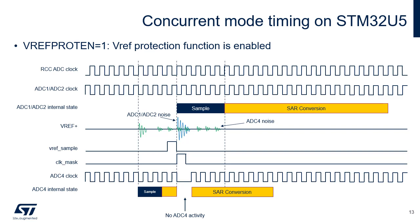This timing diagram clarifies the VREF protection mechanism when ADC1-ADC2 and ADC4 are used concurrently. ADC4 samples an analog channel, generating noise on VREF+. Then ADC1-ADC2 also starts a sampling. Since VREF protection is enabled, this stalls ADC4 for one clock cycle thanks to the clock mask internal signal. During this clock cycle, ADC1-ADC2 generates noise on VREF+. One clock cycle later, conversion resumes in ADC4. By this means, noise generated by ADC1-ADC2 will not affect ADC4 conversion.